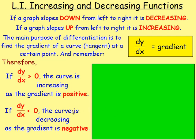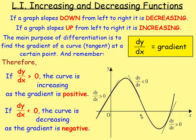Think back to the straight line chapter. A positive gradient means the line slopes up from left to right, and a negative gradient means it slopes down. You can apply that here to curves. With this curve here, you can see for this first section it's sloping up from left to right, so the derivative must be bigger than zero.